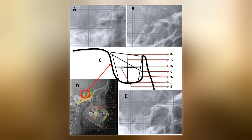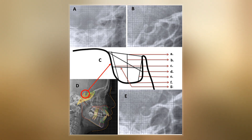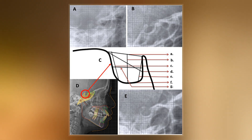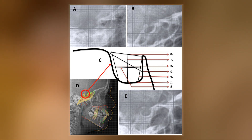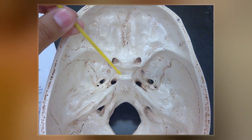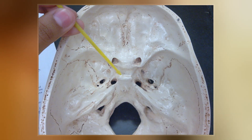The dorsum sella is terminated laterally by the posterior clinoid processes. It is widely believed that the development of the diaphragma sella is a factor which determines the morphology of the Sella turcica and its contents.